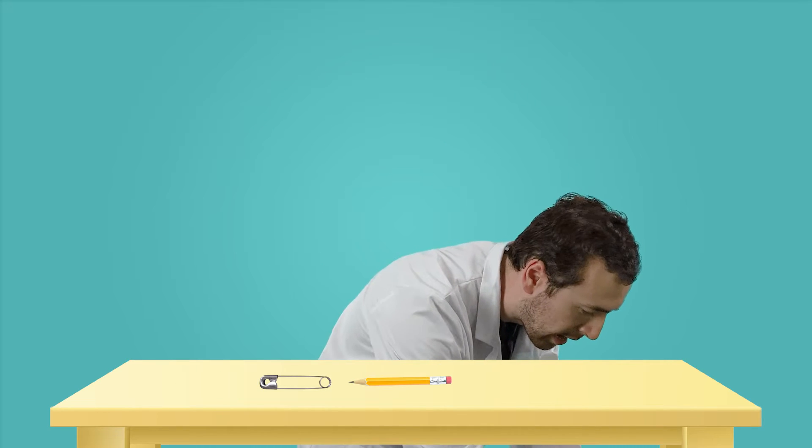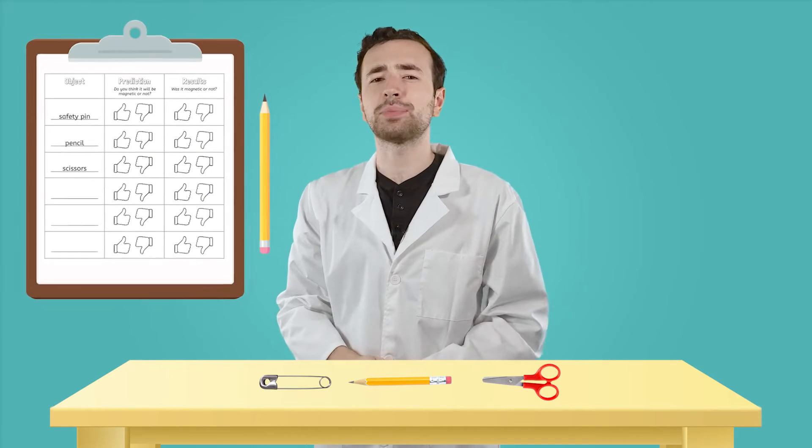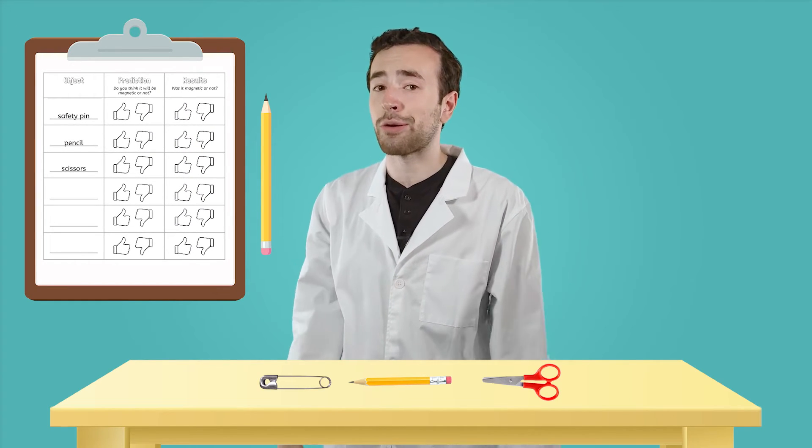Did you know that only some things are magnetic? That means attracted to magnets. Why don't we—ah, perfect. My backpack's right here. Let me grab some items so we can test. Okay. I found a safety pin, a pencil, and scissors. Let's test these objects and see if they're magnetic or not. Make sure you have your magnetism investigation sheet and a pencil ready to go.